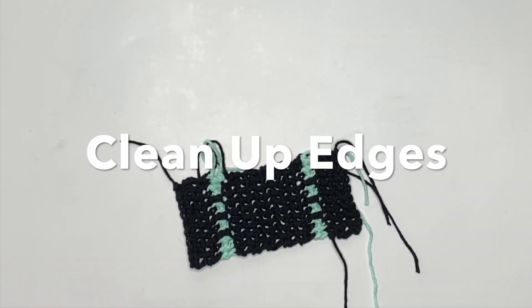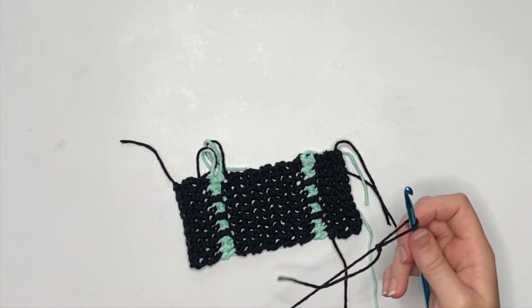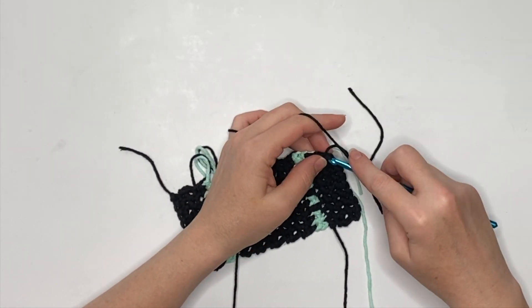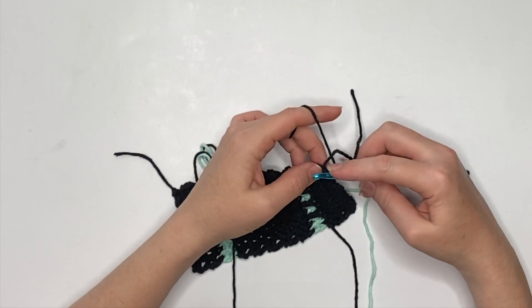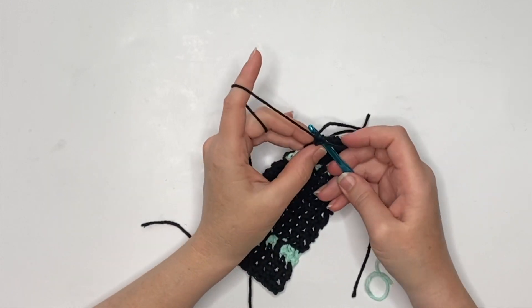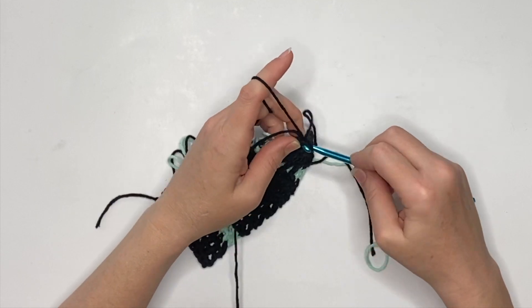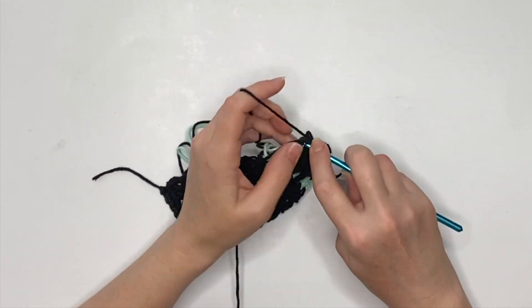Once we've finished off, we're going to go ahead and clean up our edges with a single crochet on each long side just to capture the loose ends in our mosaic section so that we don't have to do a whole lot of weaving in and make it look a little sharper.